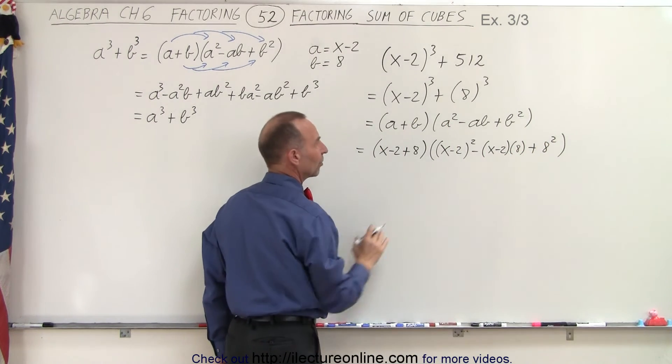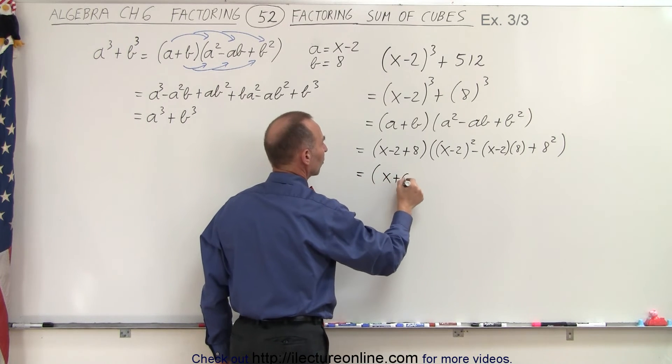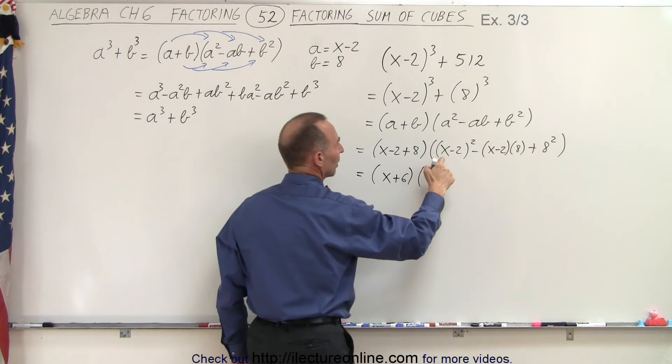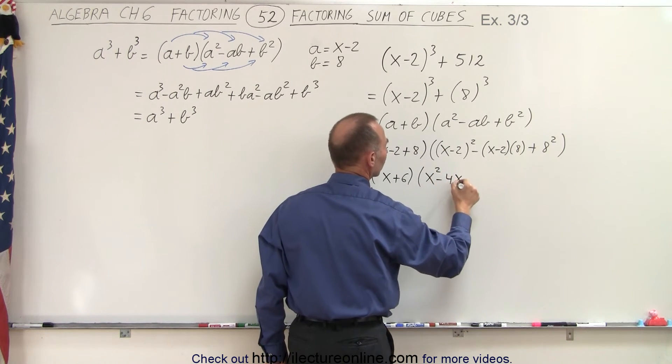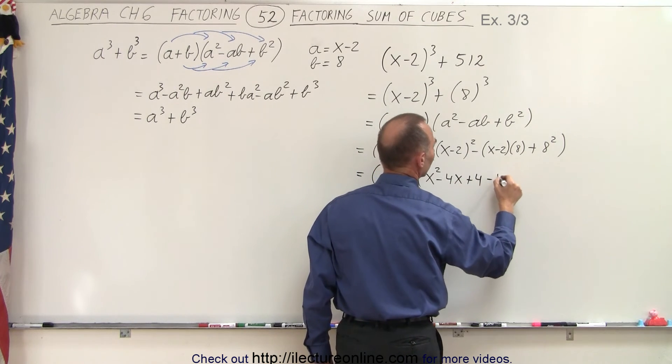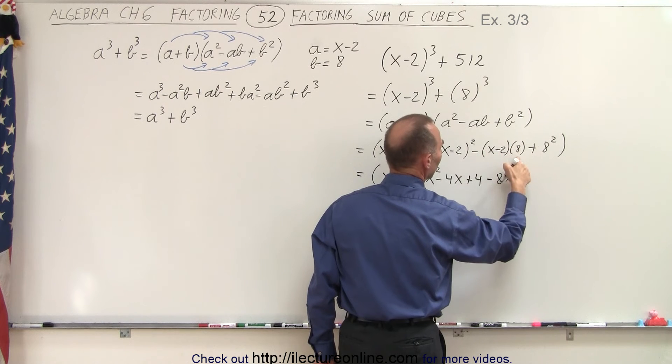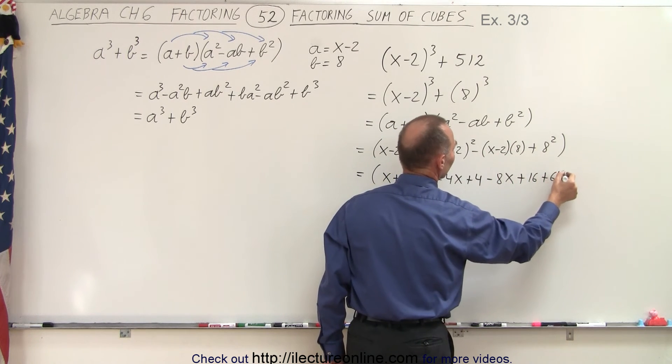And then notice we can simplify this a little bit more. So this can be written as (x+6) times, we can write this out as being x² - 4x + 4. And then here this can be written out as -8x, and that would be -8 times x-2 would be +16, and +64.